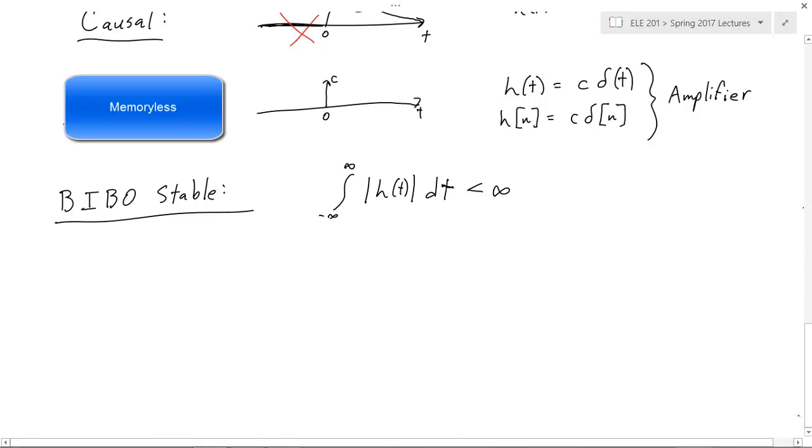It turns out that if you integrate the absolute value of the impulse response from negative infinity to infinity, and if that's less than infinity, this is exactly the condition for which it is BIBO stable. I'd like to argue that a little bit right now because I don't think this is obvious that you would guess that that's the condition. So, the first thing is, let's show that if this is true, then it's BIBO stable.